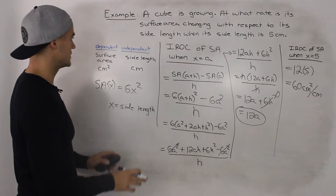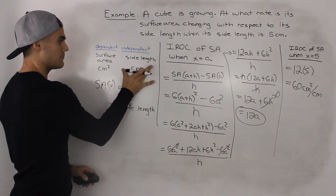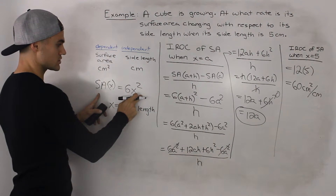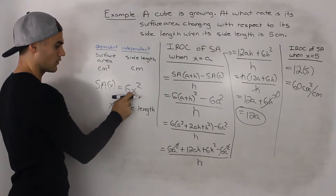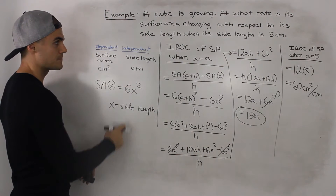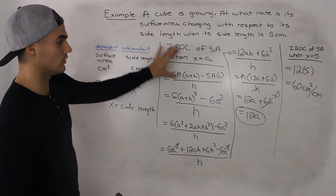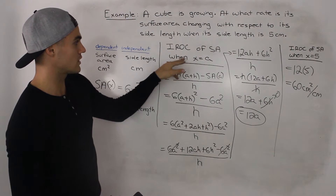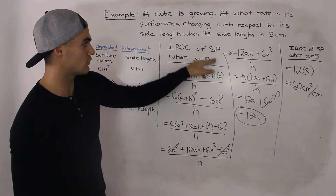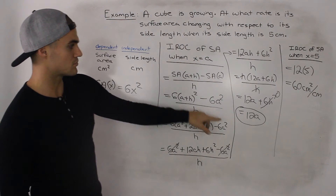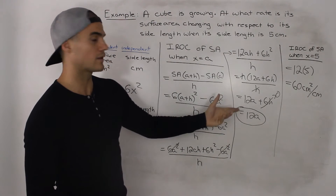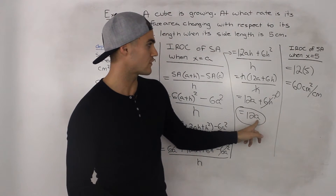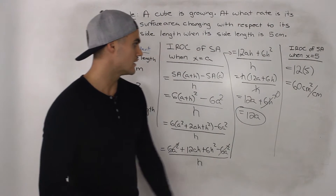As a recap: we figured out the dependent variable and independent variable, made an equation — the surface area of the cube is 6x squared where x is the side length — then found the general expression for the instantaneous rate of change when the side length equals a general value a. After the algebra we got 12a, and since we want the instantaneous rate of change when the side length is 5, we plug in 5 for a and get 60.